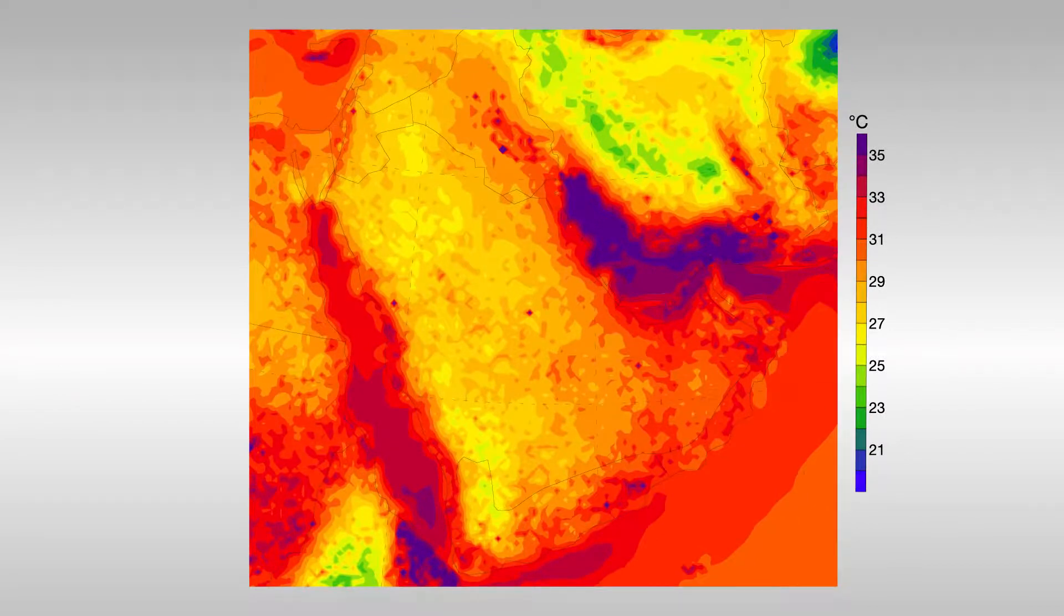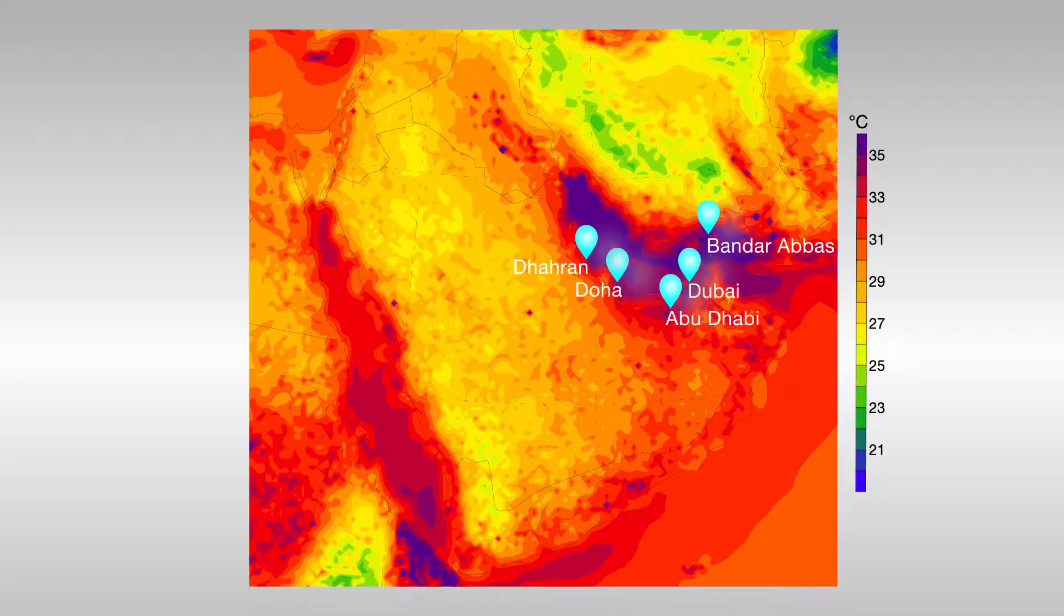By the end of the century, the annual maximum wet bulb temperature would exceed the 35 degrees Celsius threshold several times over 30 years in cities such as Abu Dhabi, Dubai, Doha, Dharan, and Bandar Abbas. And days currently among the hottest 5% of summer days would become roughly normal summer days.